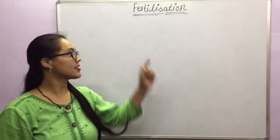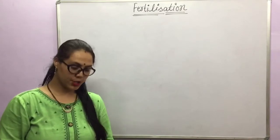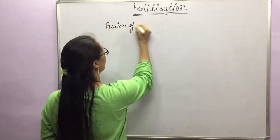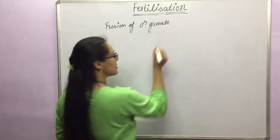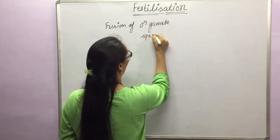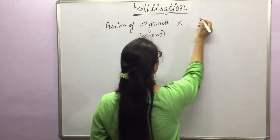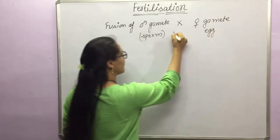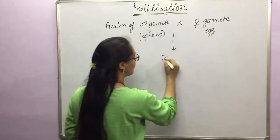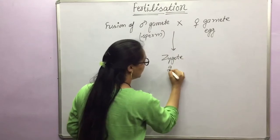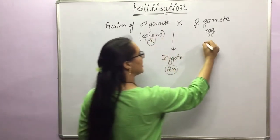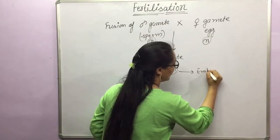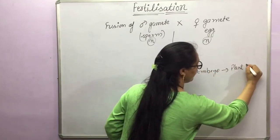Hello students, today we will discuss about fertilization in angiosperms. So what is fertilization? There is a male gamete. Fusion of male gamete — that is sperm in many cases, or male nuclei — occurs with female gamete. This fusion results in the formation of a zygote, which is diploid. The male gamete and the female gamete are haploid and they form a diploid zygote, which further develops into an embryo and hence into a plant body.